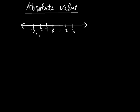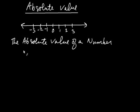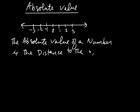Now, the reason that's important is because absolute value is actually defined in terms of distance. So we say this: the absolute value of a number is the distance to the origin. And that's it.